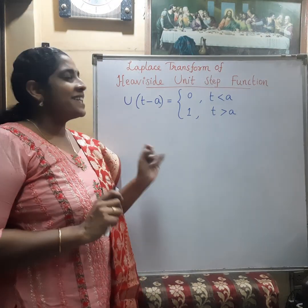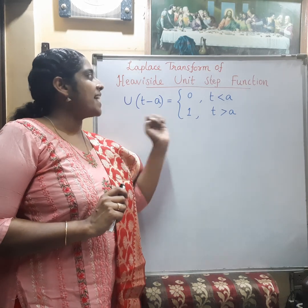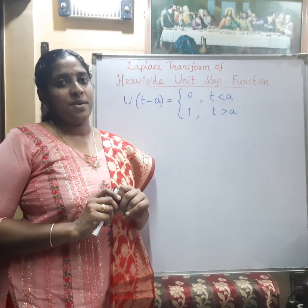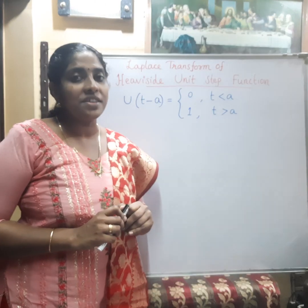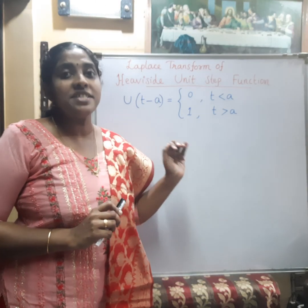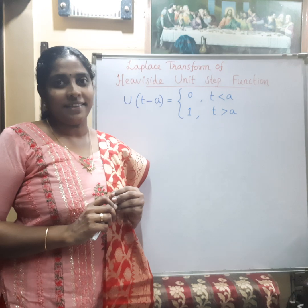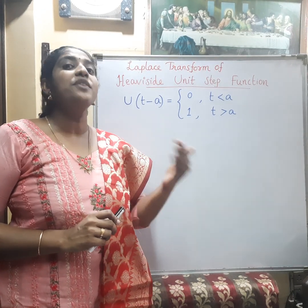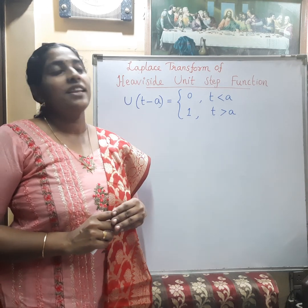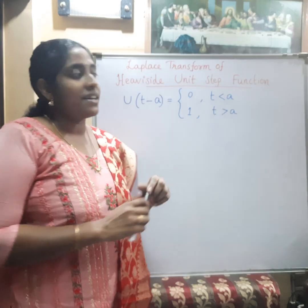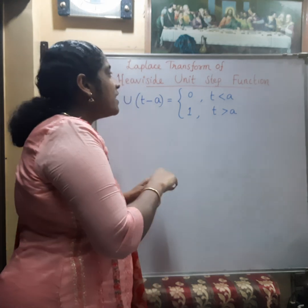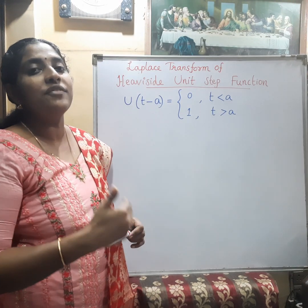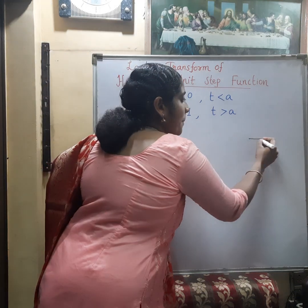Now we can see the Laplace transform of the Heaviside unit step function. What is the Heaviside unit step function? It is the same function we have seen in the second shifting property — the Laplace transform of a function multiplied by the unit step function. It has only two values: 0 when t is less than a, and 1 when t is greater than a. That is, it is like a step.